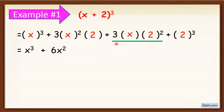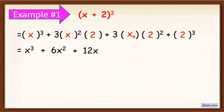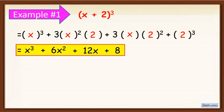Next, simplify the third term. Before multiplying by 3, simplify 2 squared first: 2 times 2 equals 4. Then 3 times 1 times 4 equals 12, and just copy x — giving us 12x. Then, 2 cubed equals 8, because 2 times 2 is 4, times 2 is 8. Therefore, our final answer is x cubed plus 6x squared plus 12x plus 8.